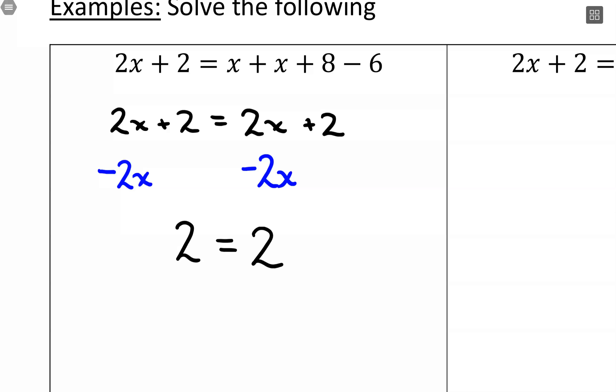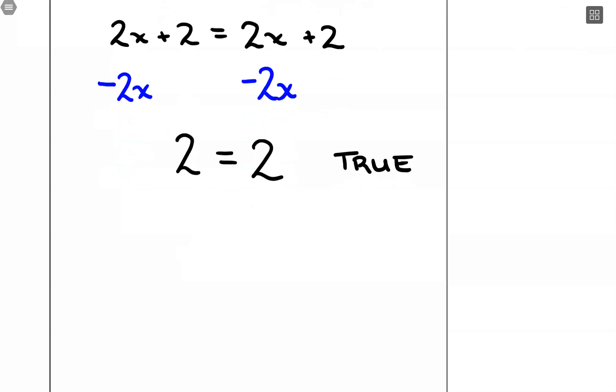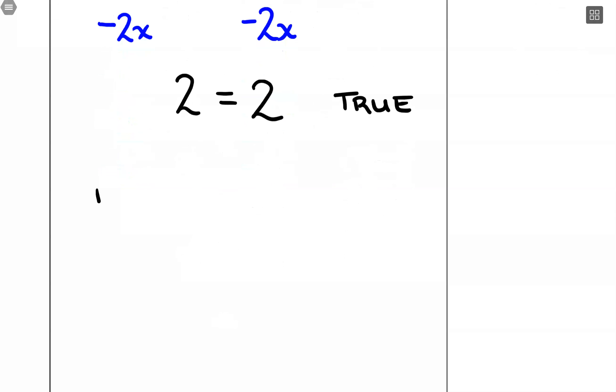So I've lost my variable. So what I need to do is analyze what kind of statement do I have here. 2 equals 2, well that is a true statement. And what that leads to is the conclusion that there are infinitely many solutions. x can be absolutely anything, and that equation will work. So if your variables cancel out but you're left with a true statement, you have infinitely many solutions.